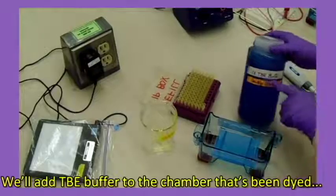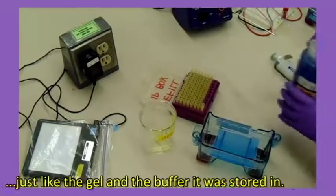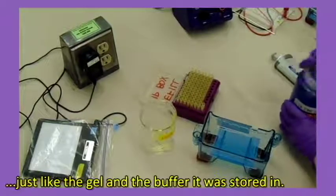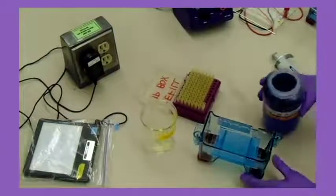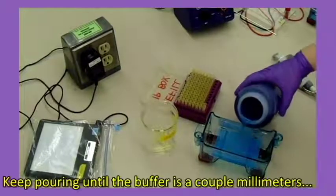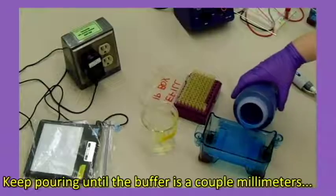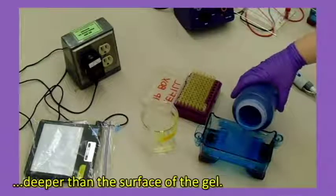We'll add TBE buffer to the chamber that's been dyed just like the gel and the buffer that it was stored in. Keep pouring until the buffer is a couple millimeters deeper than the surface of the gel.